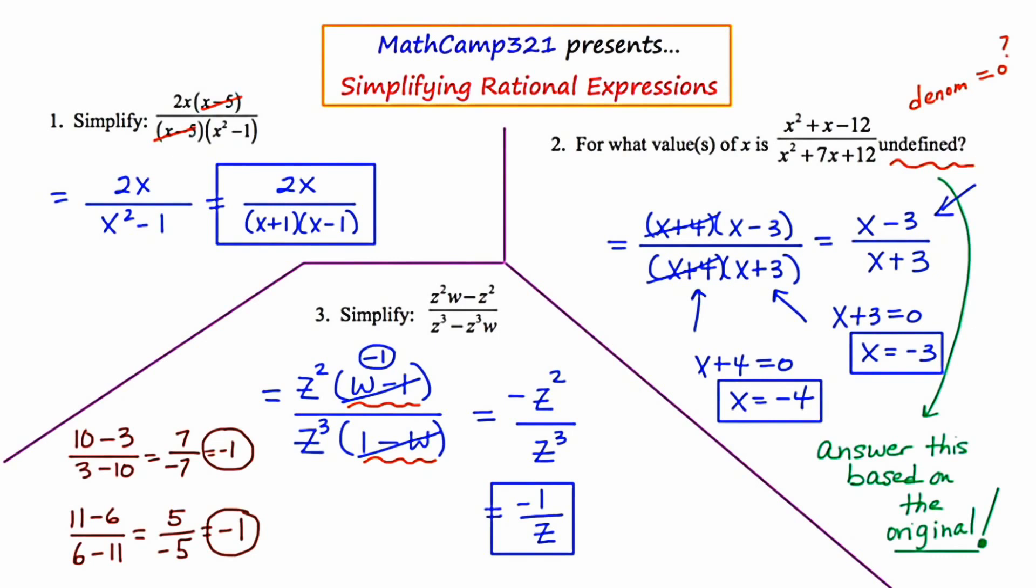And this other little trick I showed you is that if you have two expressions, one on top, one on bottom, that are complete opposites of each other, then those can be canceled out so long as you put a negative 1 in for those two expressions.